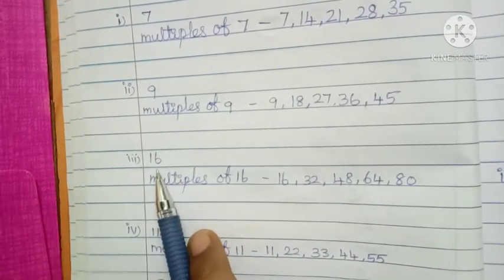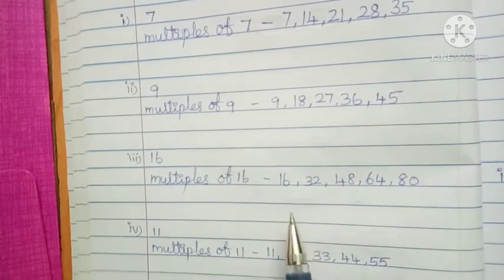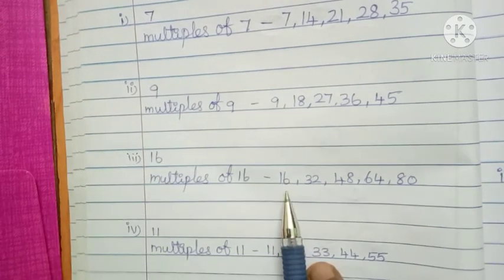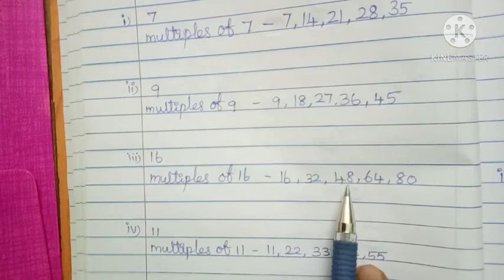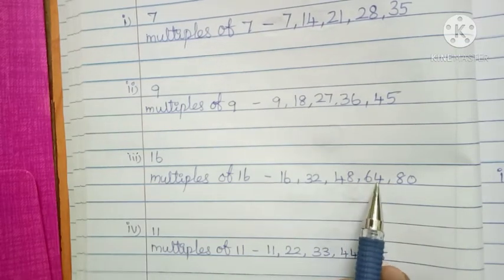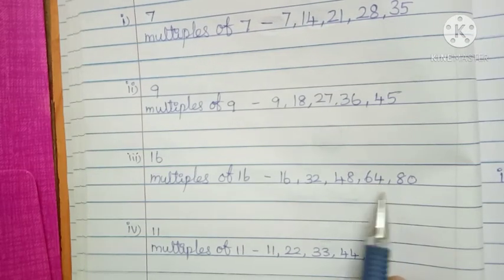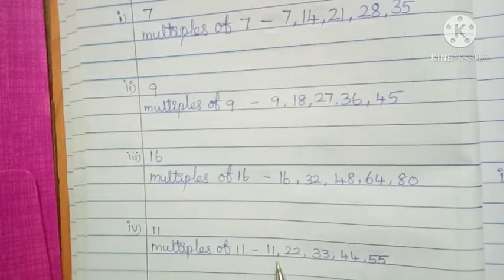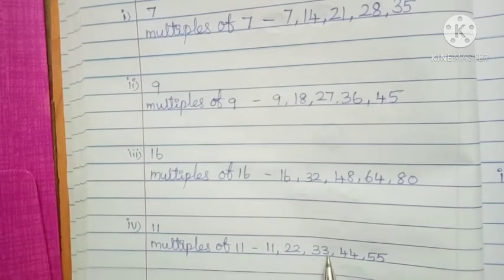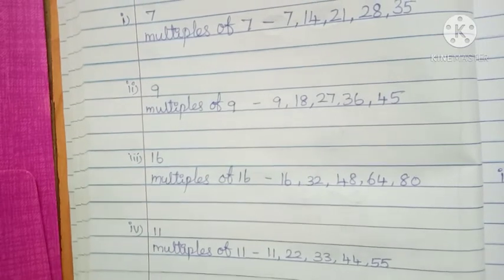Then next, write the 16 table — that is asking for multiples. 16, 1's are 16; 16, 2's are 32; 16, 3's are 48; 16, 4's are 64; 16, 5's are 80. Then next, you already learnt the 11 table: 11, 22, 33, 44, 55.